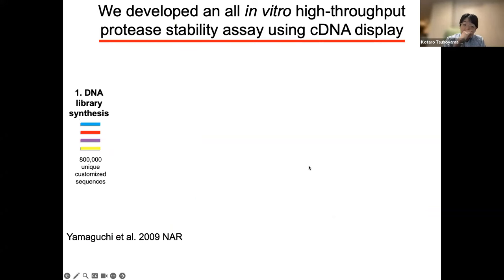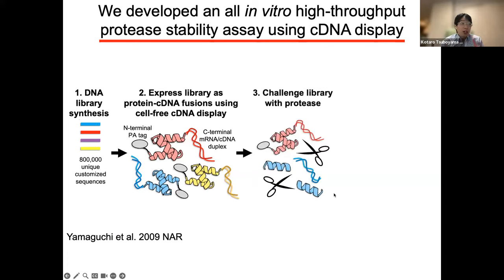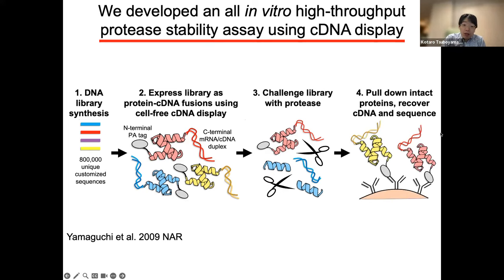In actual screening, we first order a DNA oligo library, which includes up to around 800,000 to 900,000 sequences. Then we prepare protein and cDNA complexes using the cDNA display method. We then expose such complexes to several concentrations of proteases. Then we collect intact protein and its corresponding cDNA using His-tag antibody and magnetic beads. Then we utilize NGS to identify which proteins remain after protease digestion.